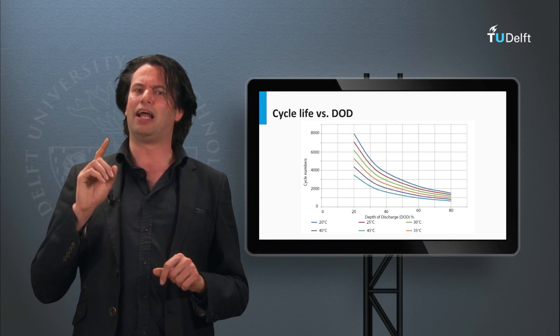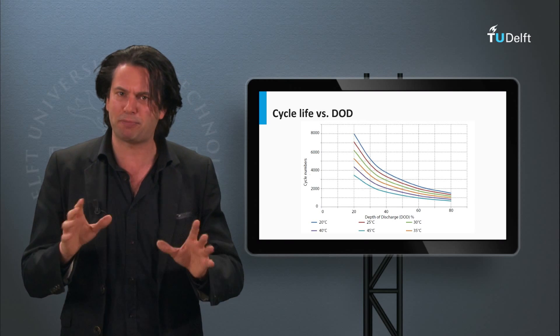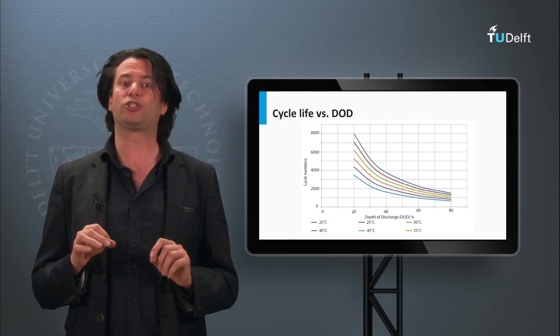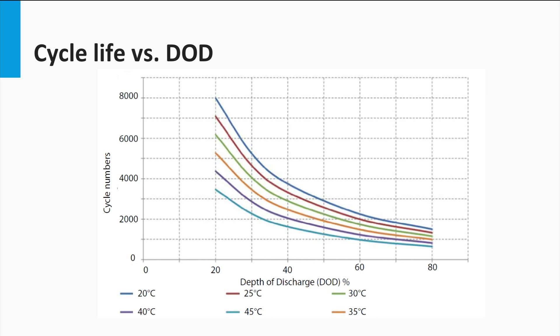Now the cycle life depends heavily on the depth of discharge until which those charge cycles last. Also, it depends on temperature. This can be seen in the graph shown here for a typical maintenance-free lead-acid solar battery. Clearly, the battery lasts longer under colder temperatures of operation. Furthermore, for a particular temperature, cycle lifetime depends non-linearly on the depth of discharge or DOD. The smaller the DOD, the higher the cycle life.